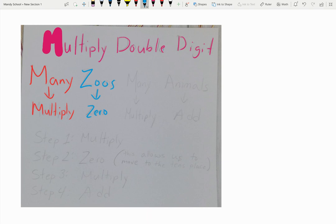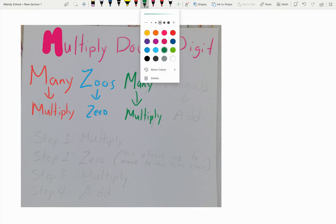So many zoos, many animals. So many again would be multiply. And then if there are many zoos, there's got to be many animals in those zoos. So write that acronym down.